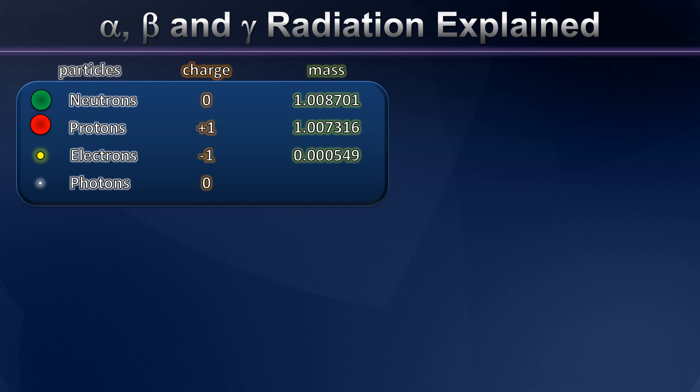But electrons, well they're so much less massive than protons and neutrons that we typically don't think of them as having mass. When we calculate the mass of an atom, we usually just neglect electrons altogether. And photons, well, photons we think of as being essentially massless because they're so very, very tiny.